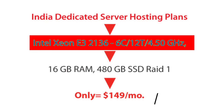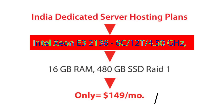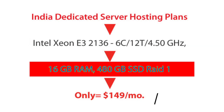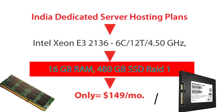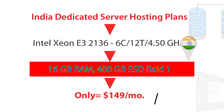In Plan X1 you will get an Intel Xeon E3-2136 processor with six cores and 12 threads, and a speed of 4.50 GHz. You will also get 60 GB RAM, 480 GB SSD storage space, and one RAID. The server location will be in India.